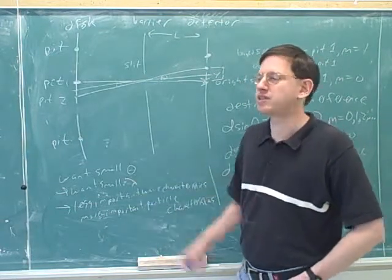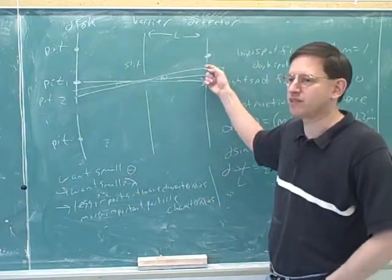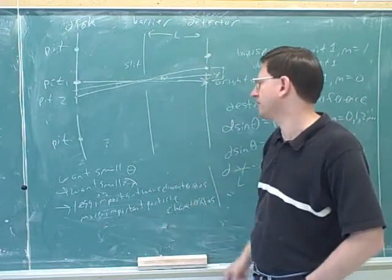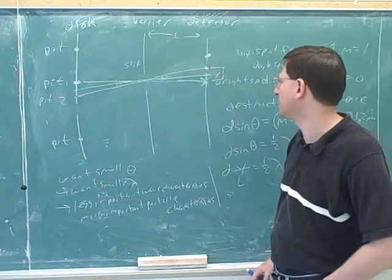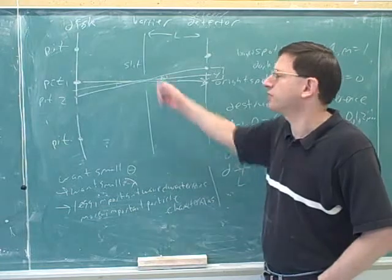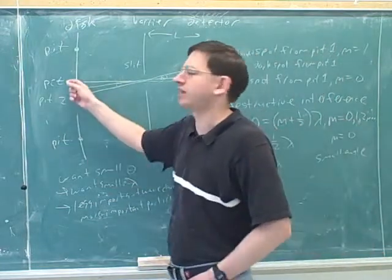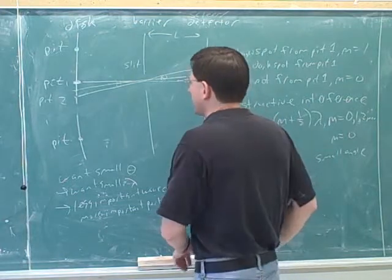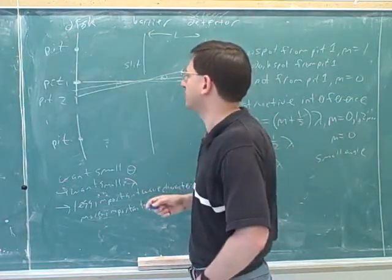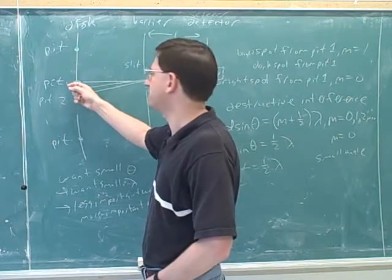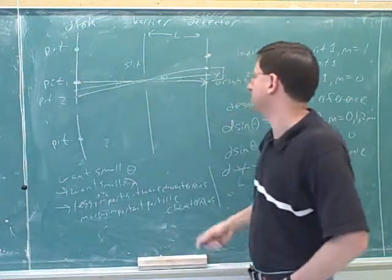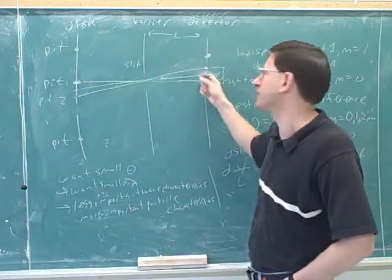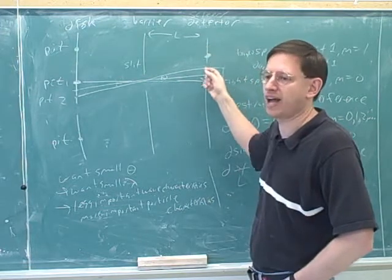But we didn't say why that was. Well, this is our first example of why that is. This is our first example of how a small wavelength makes something behave more like a particle. Because remember, if the light was really particles, we could put the pits as close together as we liked. If light was really particles, the pits could be as close together as they liked, and the particles would still always hit different spots, because particles don't diffract. They don't spread out.